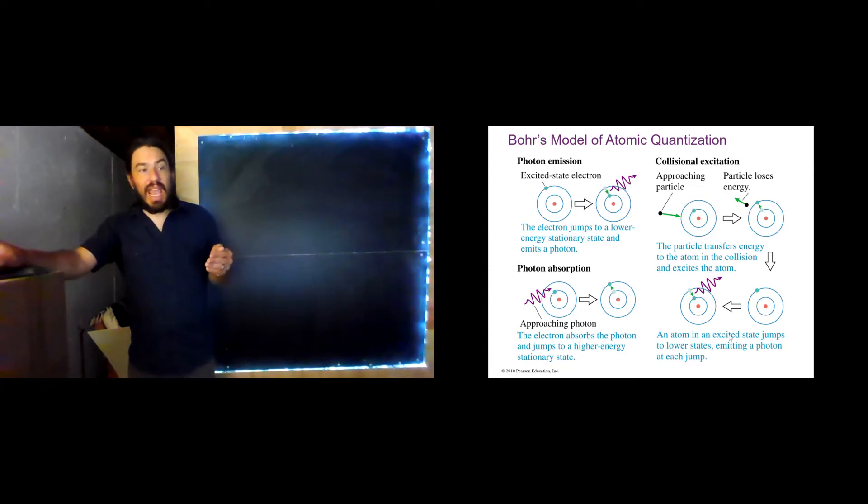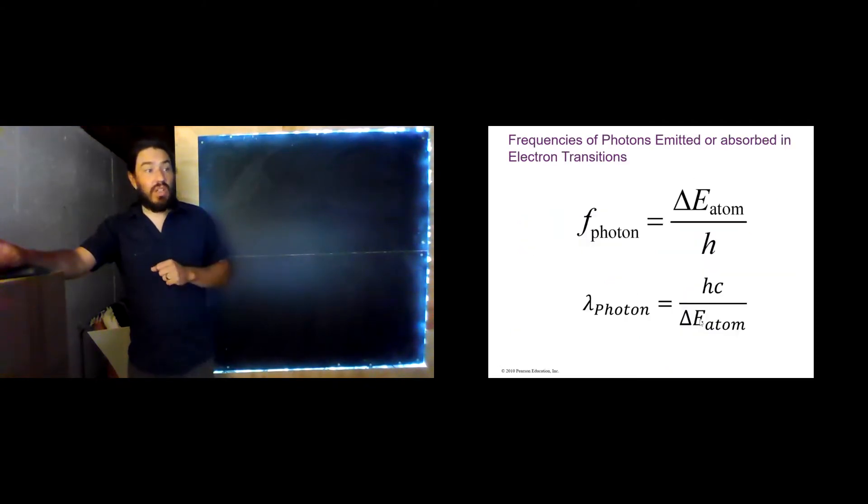So we can have a collision between an electron and an atom, which will bump one of the electrons within the atom to an excited state. But either way, however they get excited, they will transition to a lower state by releasing a photon. Again, this is the photon emission.